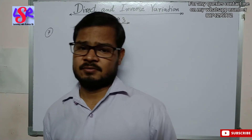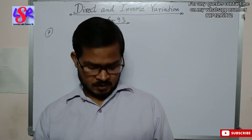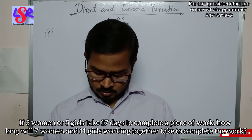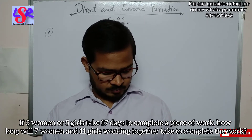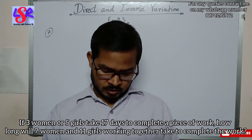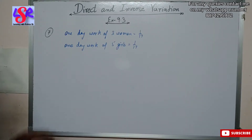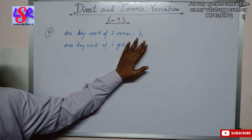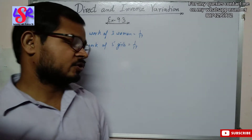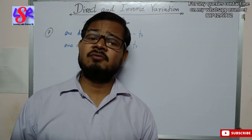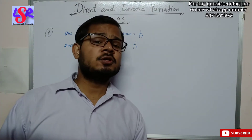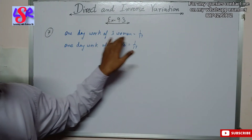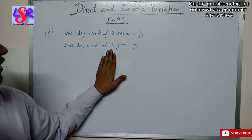Now let's see question number 7. If 3 women or 5 girls take 17 days to complete a piece of work, how long will 7 women and 11 girls working together take to complete the work? The 1 day work of 3 women equals 1 upon 17, and the 1 day work of 5 girls equals 1 upon 17, since both groups take 17 days to complete the work.